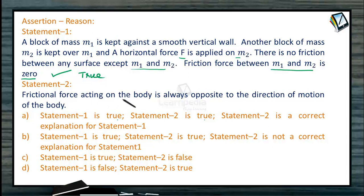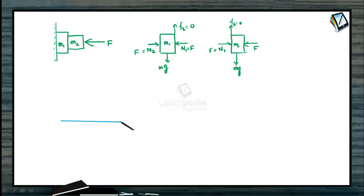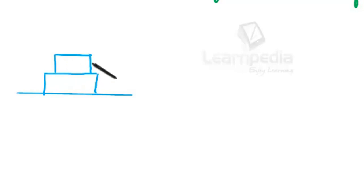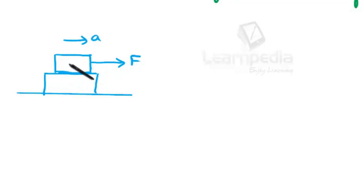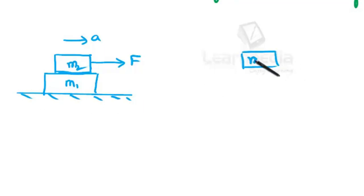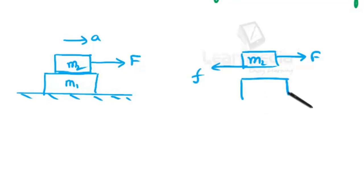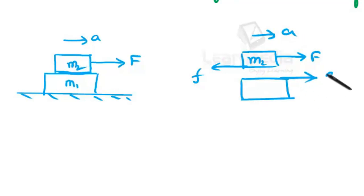Now let us check Statement 2: friction force acting on a body is always opposite to the direction of motion of the body. Consider a horizontal surface with two bodies; a horizontal force F is applied on the upper body. The acceleration and motion are in one direction, so friction exists between the two surfaces. Let us call them m1 and m2 and draw their free body diagrams.